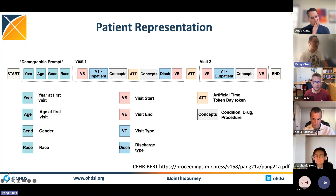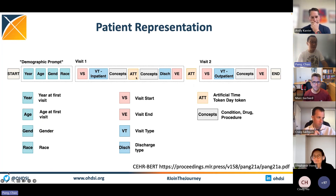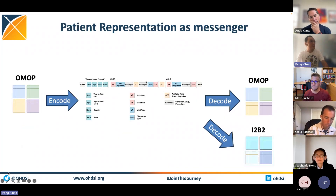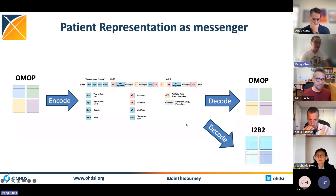In the demographic prompt, we have a few tokens: year at first visit, age at first visit, gender, and race — marking the starting point of the patient journey. In each visit block, it contains a visit type followed by the medical concepts associated with those visits. The key innovation here is the use of artificial time tokens, or ATT, to represent the time intervals in days between visits and also within the inpatient visit span to preserve patient duration.